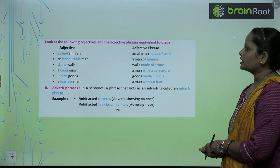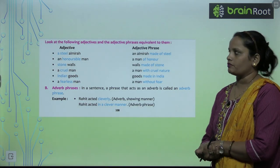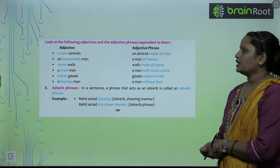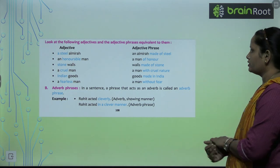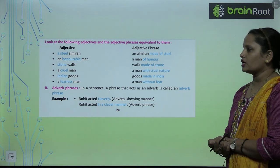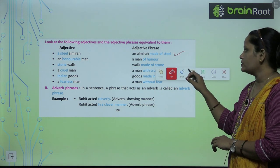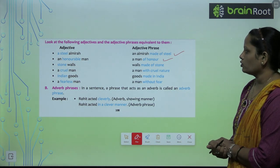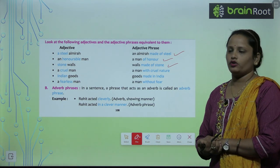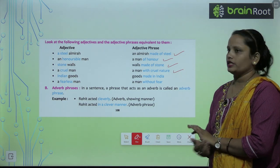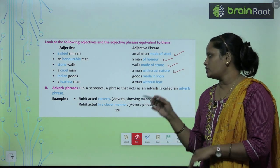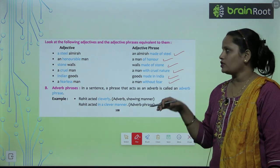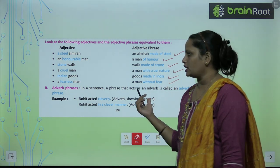Look at the following adjectives and the adjective phrase equivalent to them. A steel almira → an almira made of steel. An honorable man → a man of honor. Stone walls → walls made of stone. A cruel man → a man with cruel nature. Indian goods → goods made in India. A fearless man → a man without fear. So aise hamne in adjectives ko adjective phrase mein convert kar liya hai.